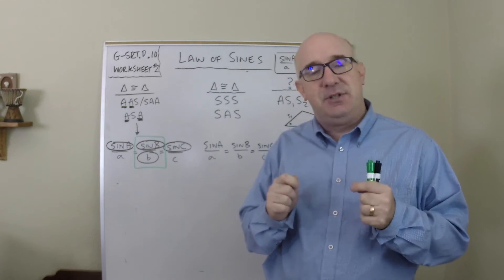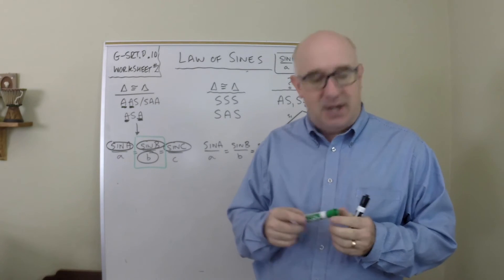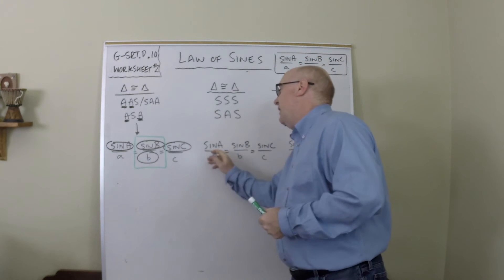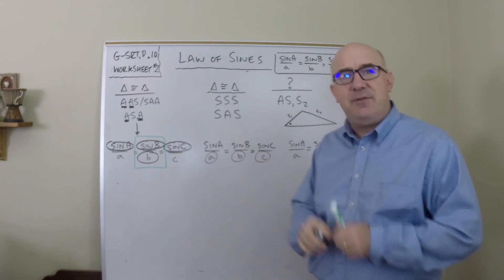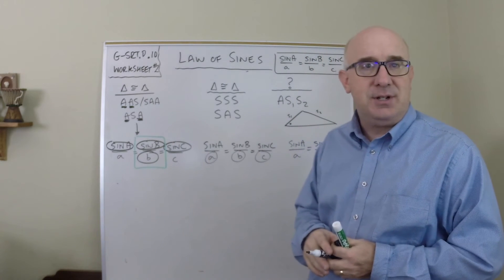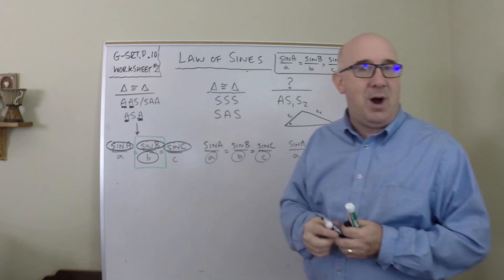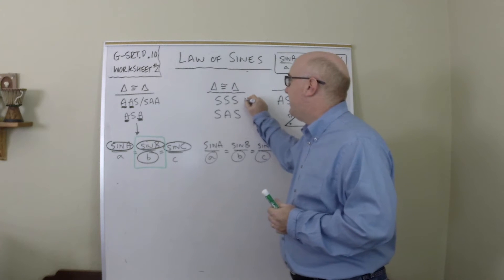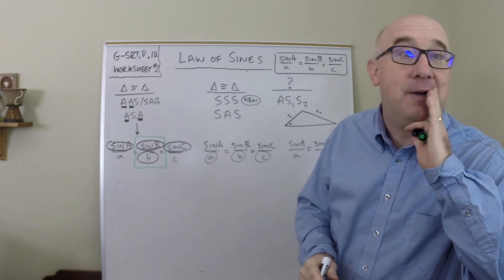Now what happens if we didn't provide any angles at all? Side-side-side is a relationship that gives you congruence, yes, but does it work for the Law of Sines? The answer is no, it doesn't. Because if I give you three sides, you have no knowledge of angles, and so there is no magic pairing that's required.